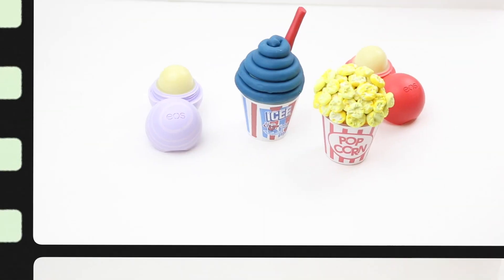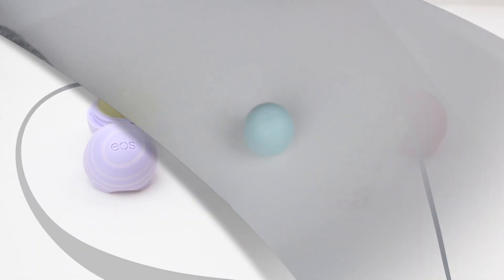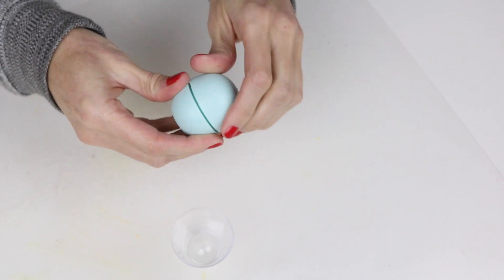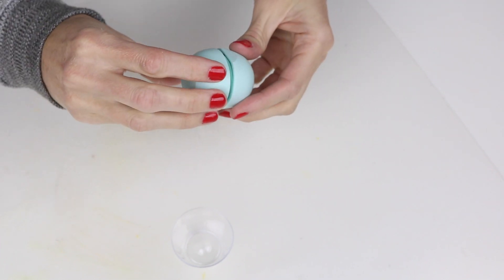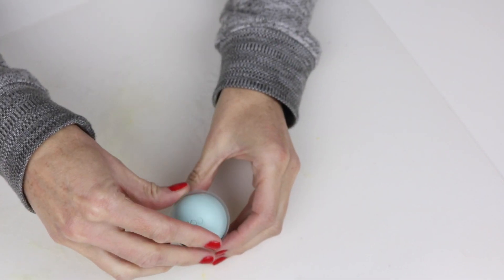If you're not already subscribed please do so for more fun DIYs. For the icy EOS container you will need an EOS lip balm and a plastic glass or shot glass like this one.